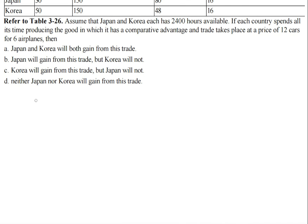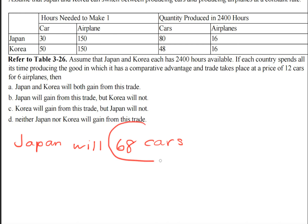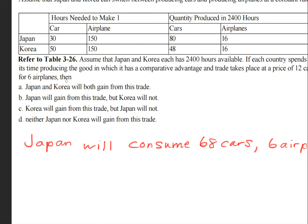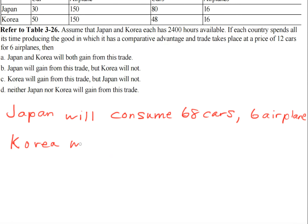Let's break this down further into what each country will consume. Japan will consume 68 cars — because it specializes in making cars and produces all 80, and since it trades away 12 cars, what's left is 68 cars for itself to consume. It will also receive and consume 6 airplanes, since Korea will trade and give Japan 6 airplanes.